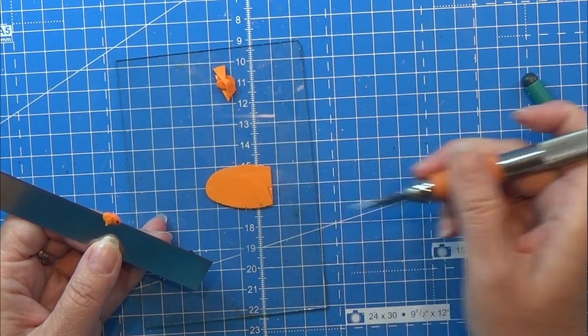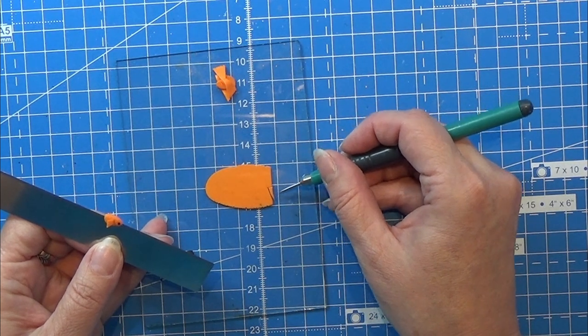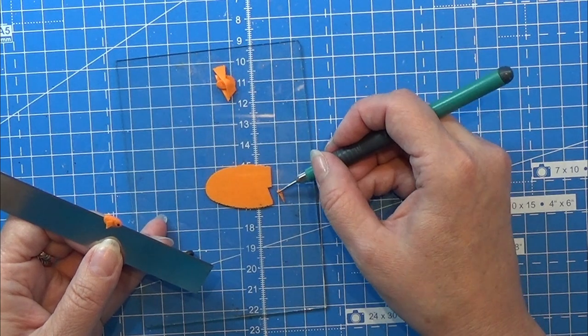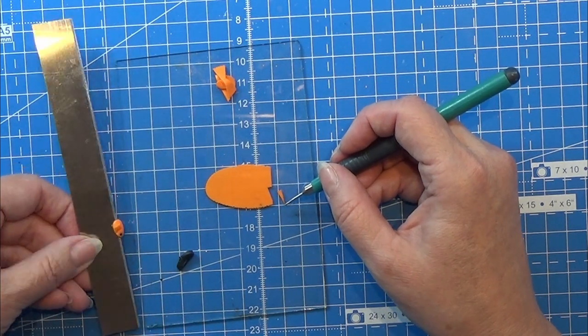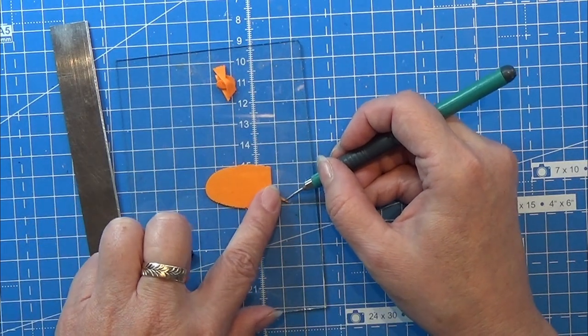I cut another tiny triangular shape and I am using that for the top fin. Again I'm giving them a few lines and then I am placing that on top of the little goldfish here. I hope you can see what I'm doing.